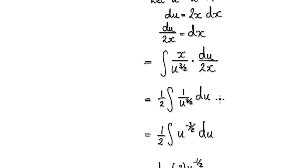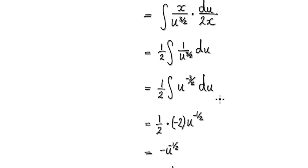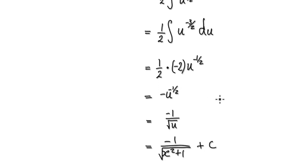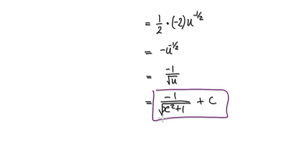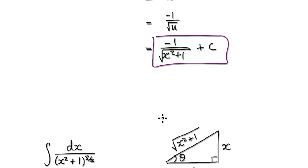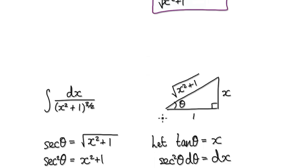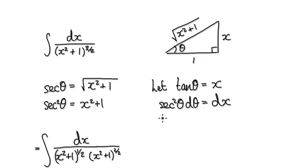And then when you integrate it, it should be easy to integrate, and it will give you this. So now let's go back to the original. Let's try and integrate this. So here you don't have the luxury of this x here. So this here is just a 1.